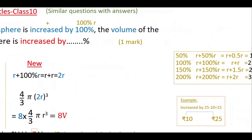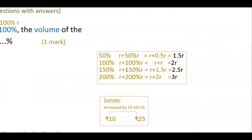If they give the percentage in a different way, for example if they give 50 percent, then you do r plus 50% r, that is r plus 0.5r, which gives 1.5r. Similarly, for 100 percent you get 2r, for 150 percent you get 2.5r, and for 200 percent you get 3r. You have to find the new radius like this.